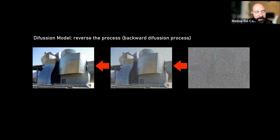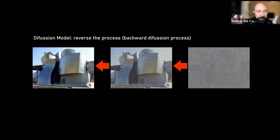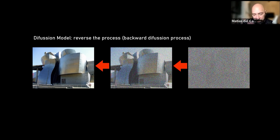What diffusion models do is reverse that process — taking a random noise image and organizing the pixels in a way that aligns with the prompt you gave it. This is actually a back-and-forth process, not just one direction. It's really going back and forth continuously.